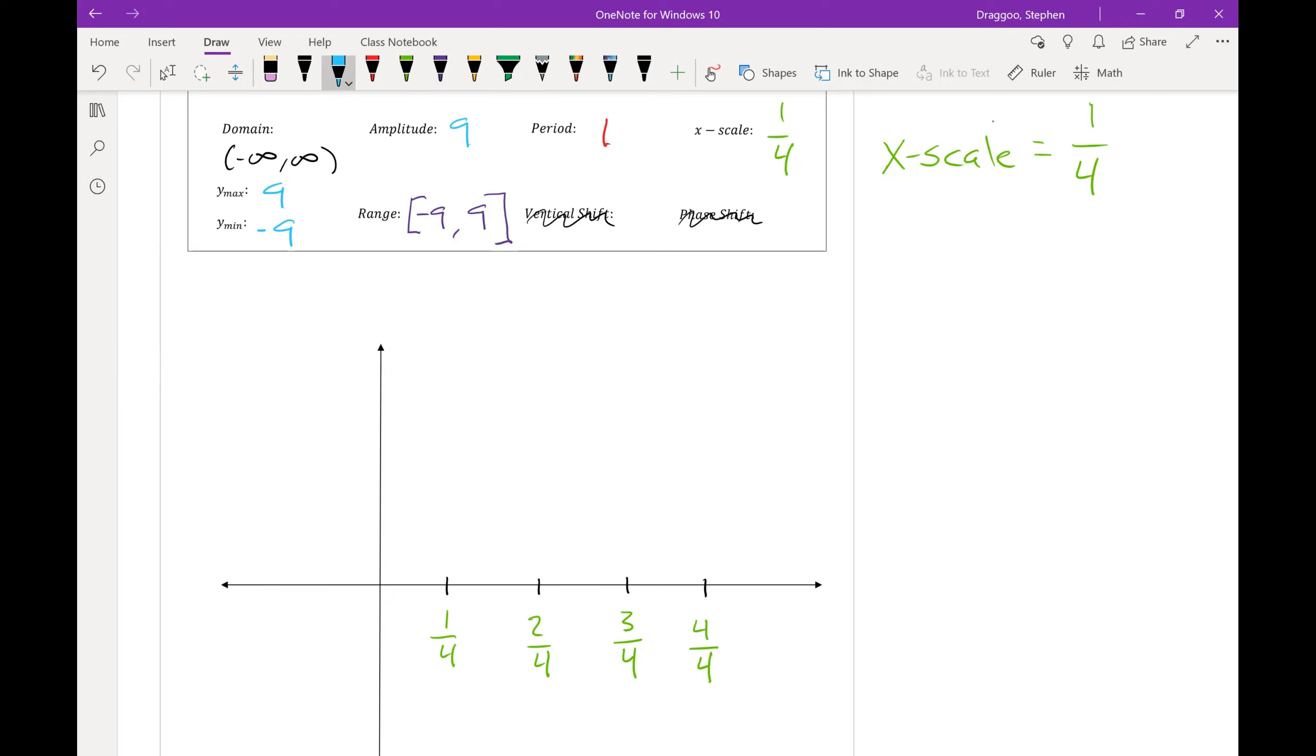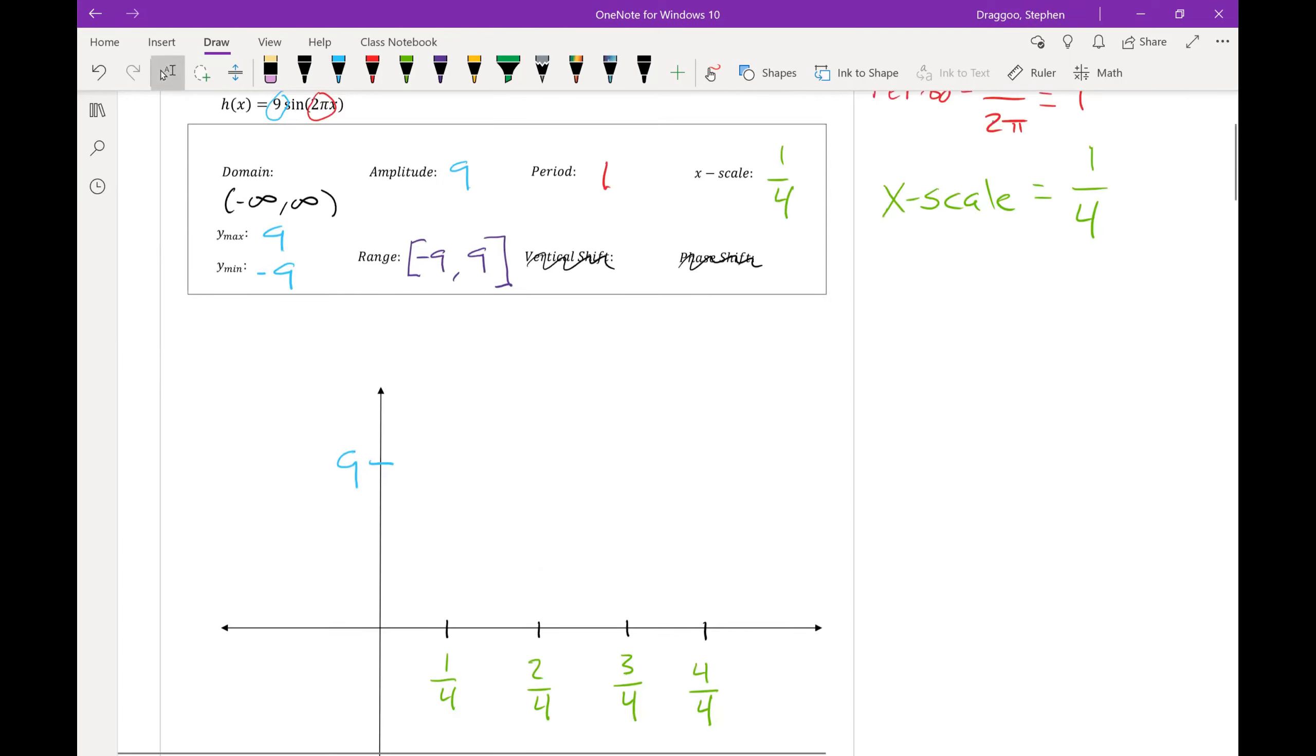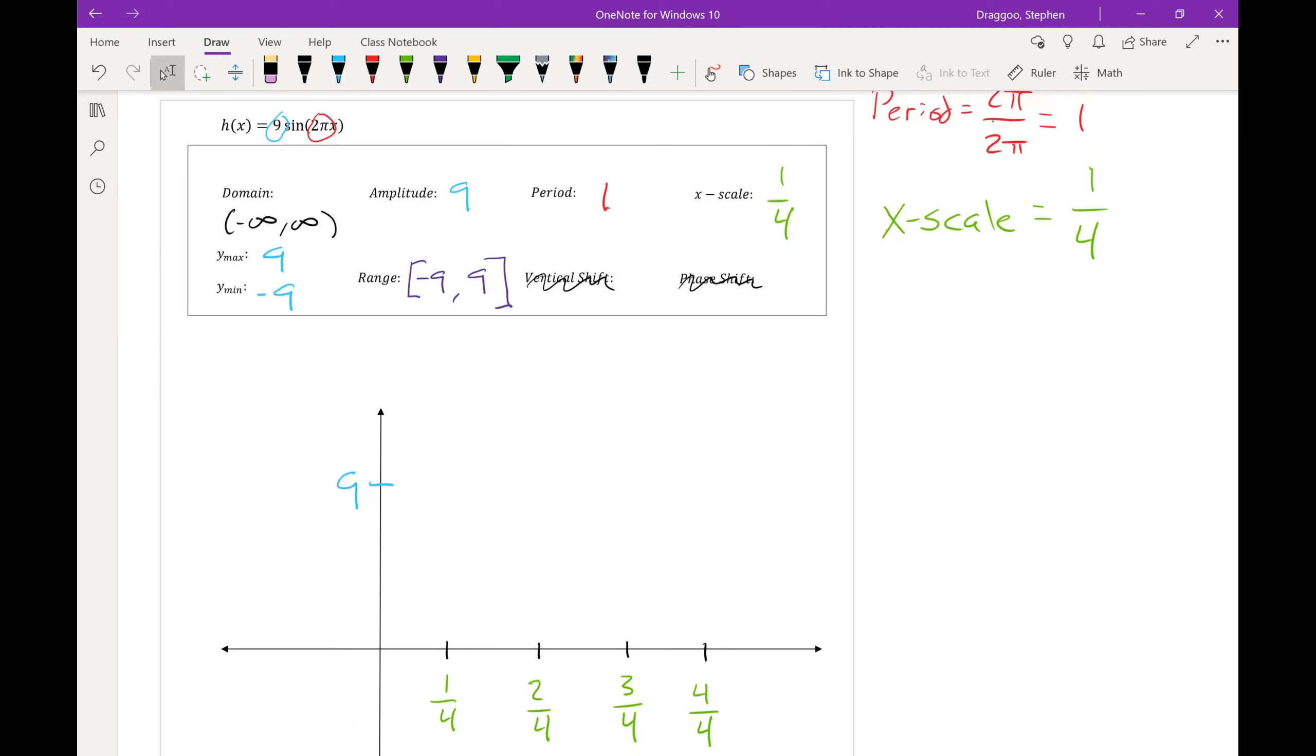Next, I'm going to put my y maximum and y minimum values on the y axis. So 9 and negative 9. And lastly, I'll just need to get my 5 key points. I have a graph of sine, which means I start at the center line. And since there is no vertical shift, that means this graph just starts at 0, 0.